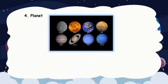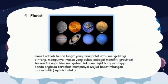4. Planet. Planet adalah benda langit yang mengorbit atau mengelilingi bintang, mempunyai massa yang cukup untuk memiliki gravitasi tersendiri agar bisa mengatasi tekanan rigid body, sehingga benda angkasa tersebut mempunyai wujud kesetimbangan hidrostatik atau nyaris bulat.